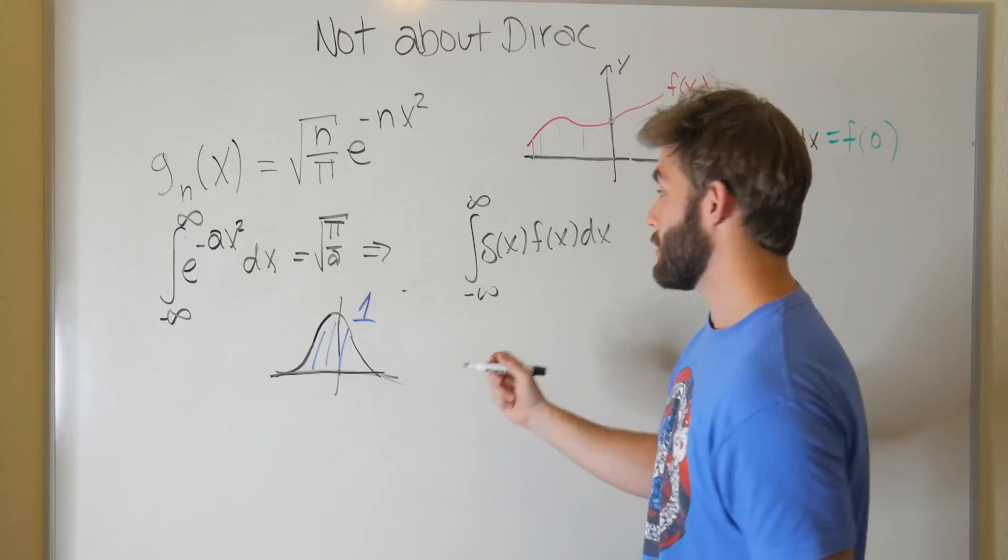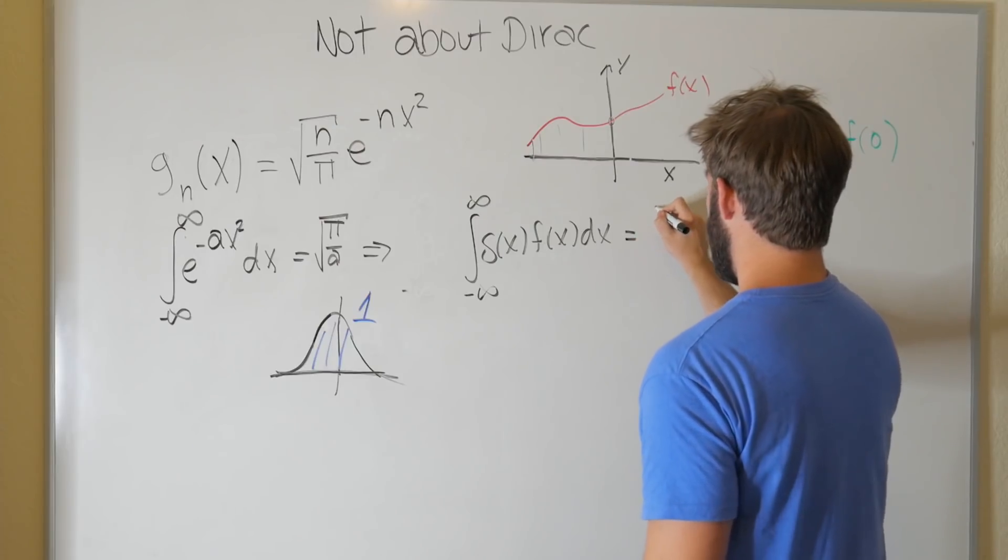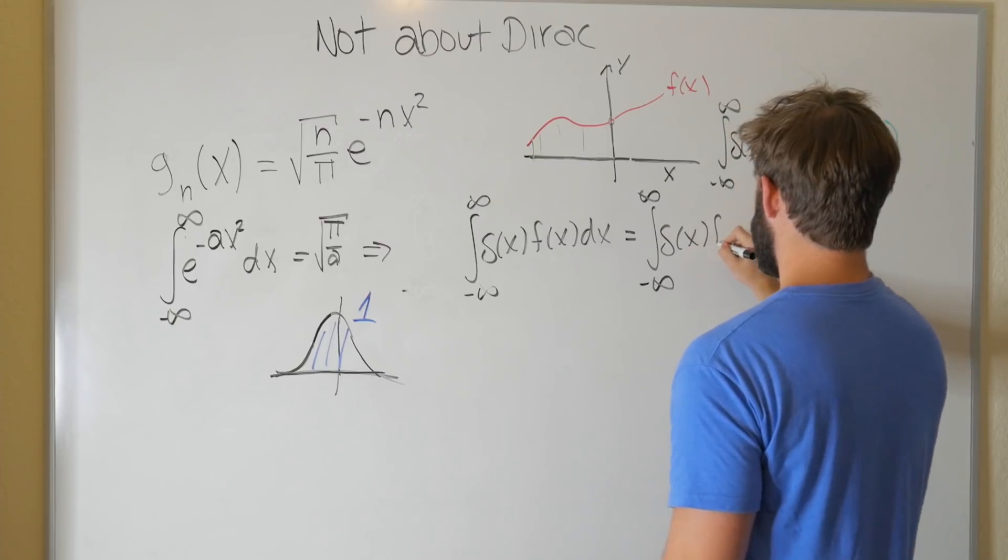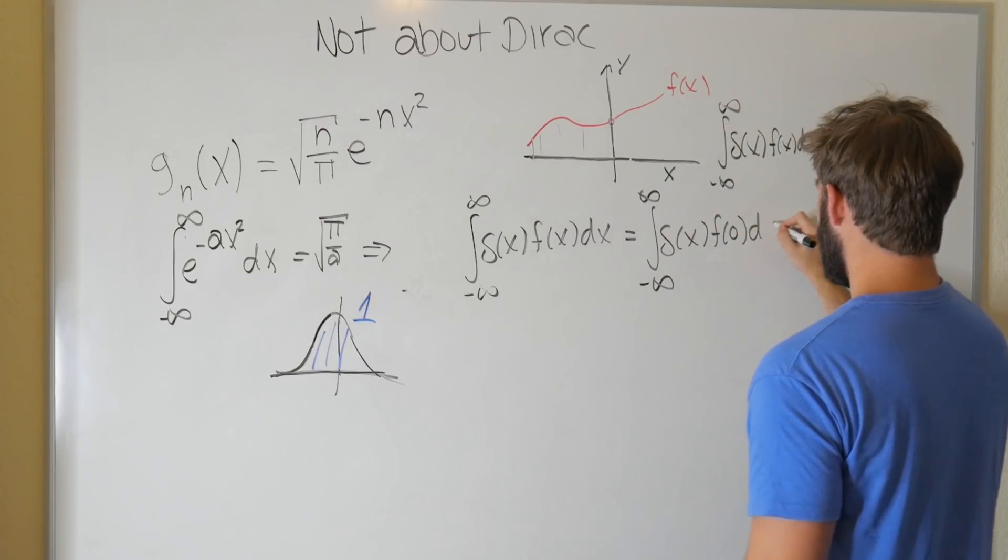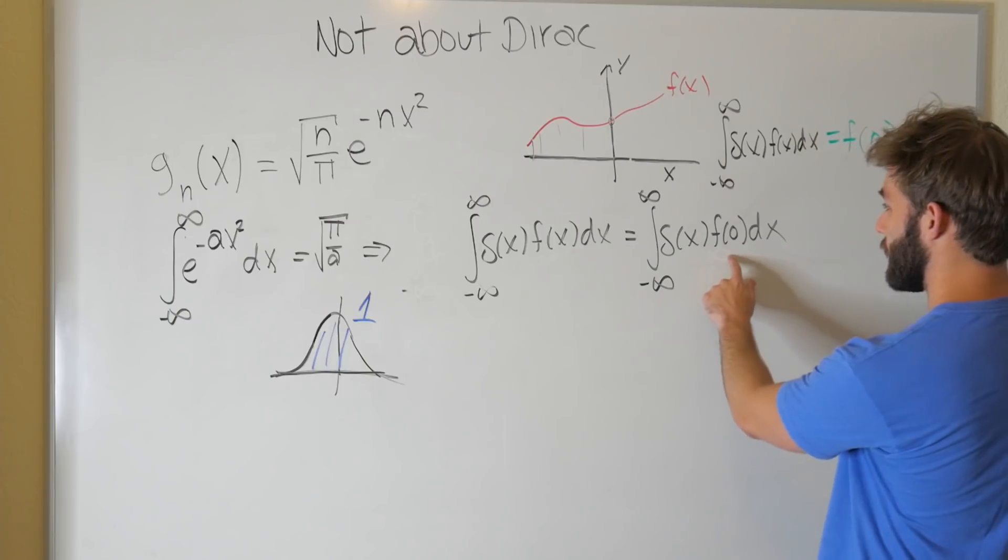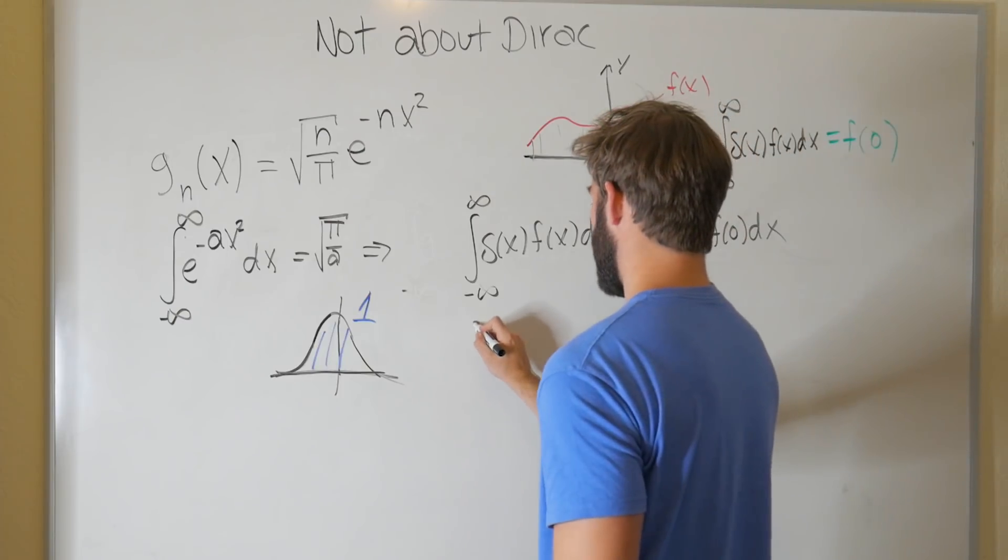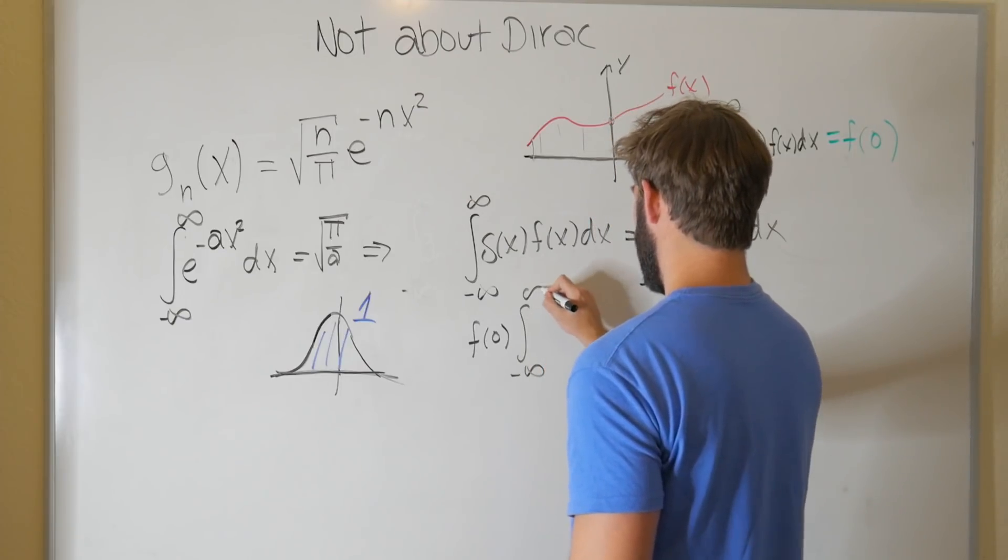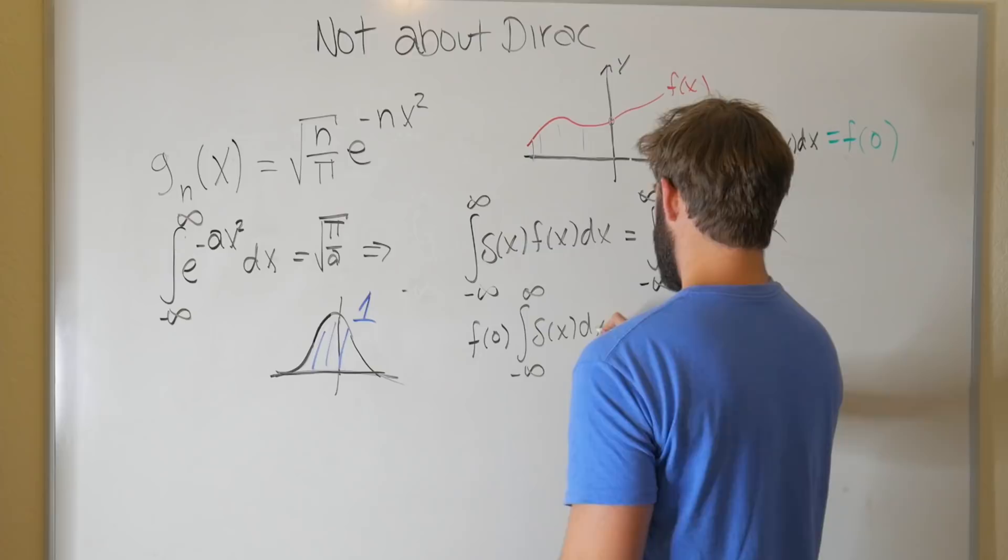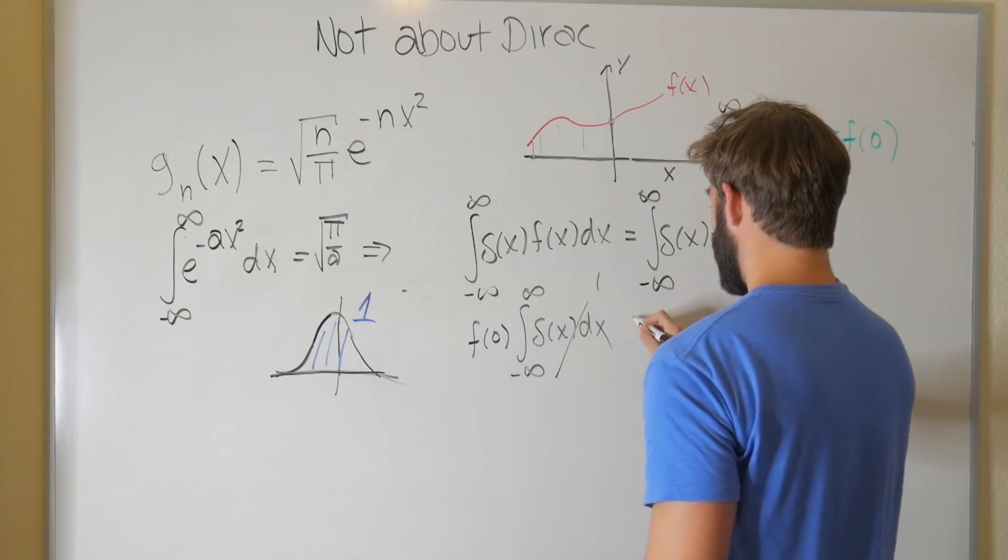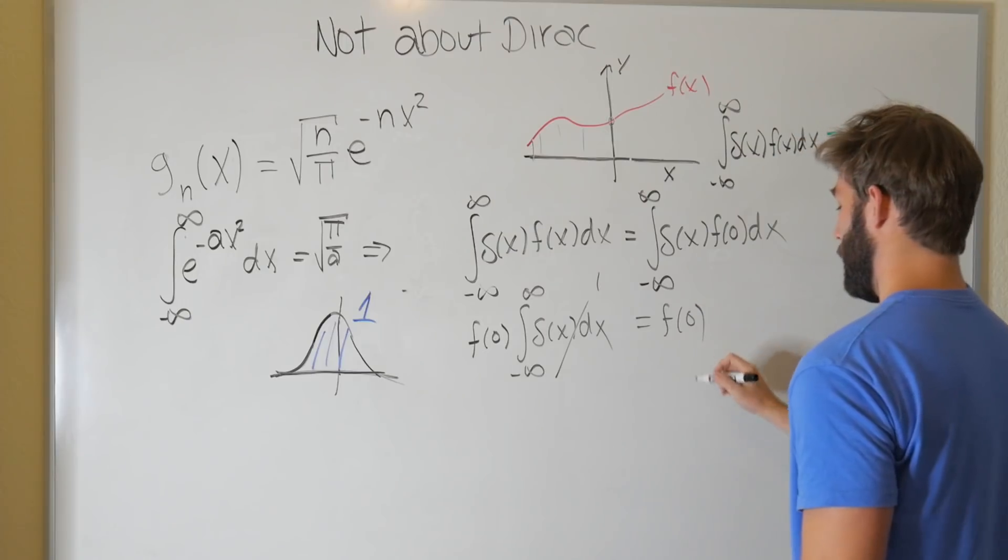but we know that that's the only interesting point, so this can be written as the integral from negative infinity to infinity of delta x times f of zero, right? Because all other points just go to zero anyways. Well, now that we're just looking at f of zero, we can pull it out as a constant, which is equal to the integral times the integral of delta x dx, which we just showed that this is equal to one, which means that this is equal to f of zero.